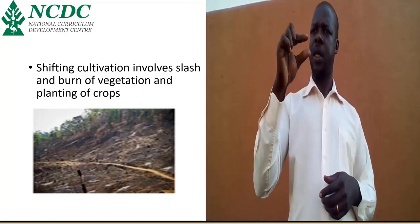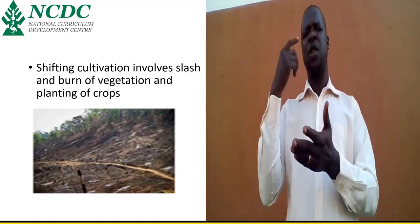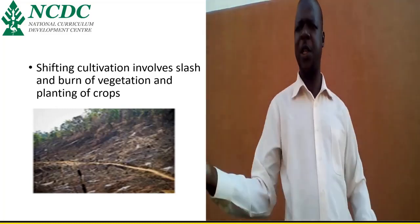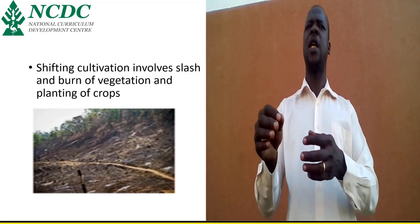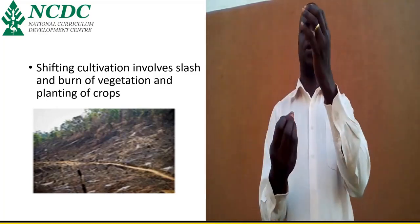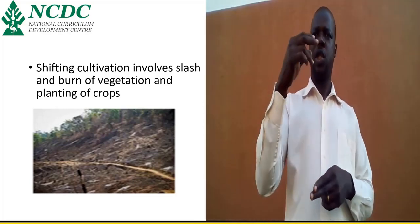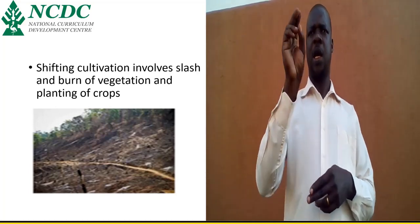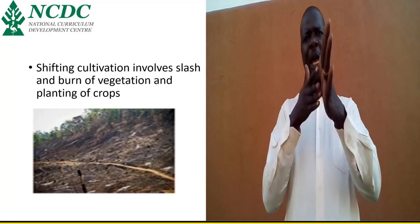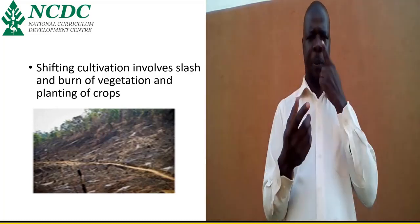Another word is shifting cultivation. What does it mean? Slash — when you get good land, you slash it or the grass. When it dries, you burn. And then use the land for planting crops. That is called shifting cultivation. We sign it: slash and burn. That is the sign.